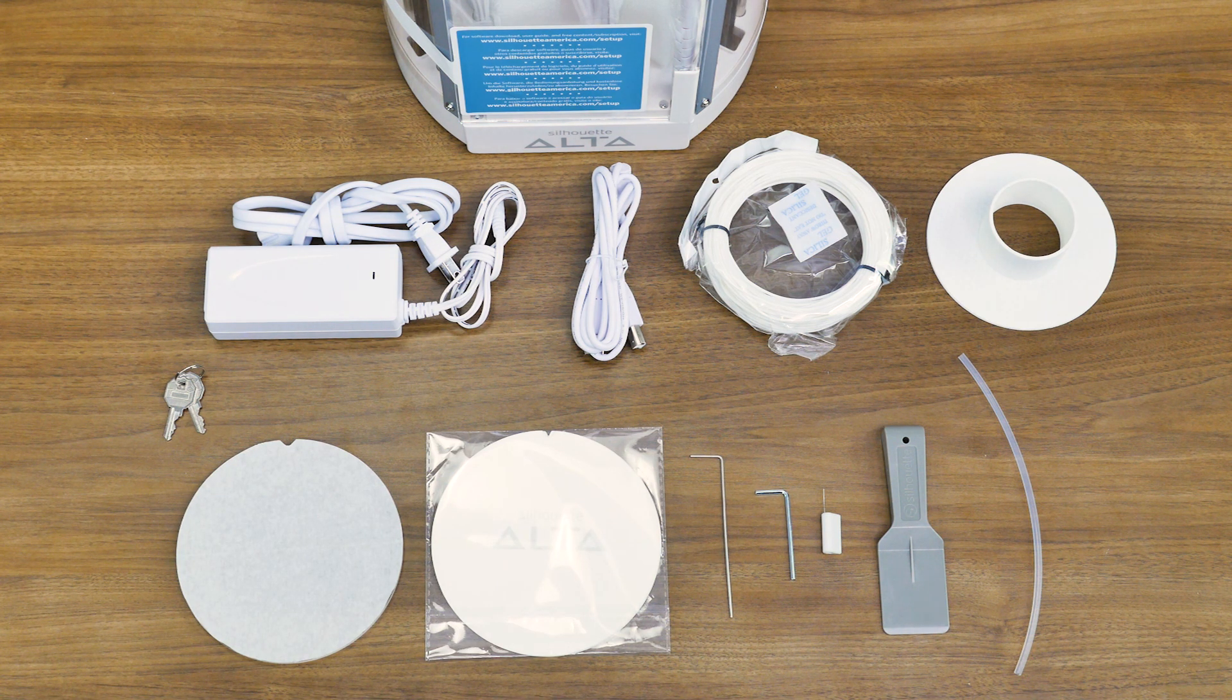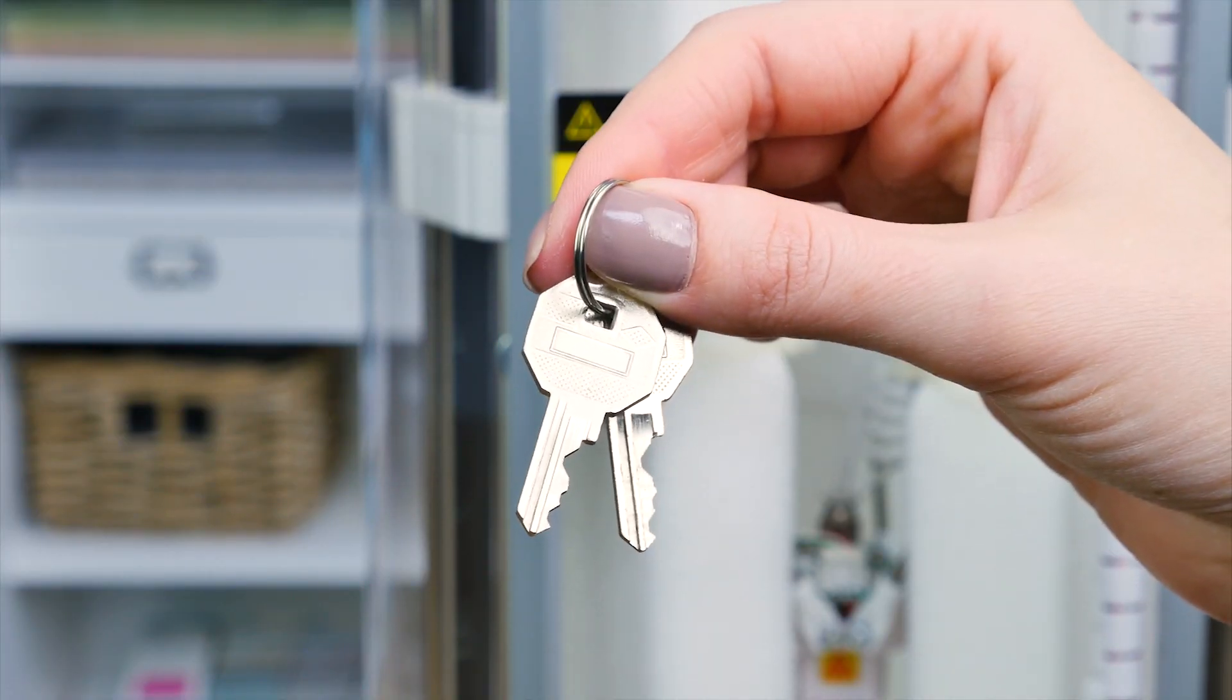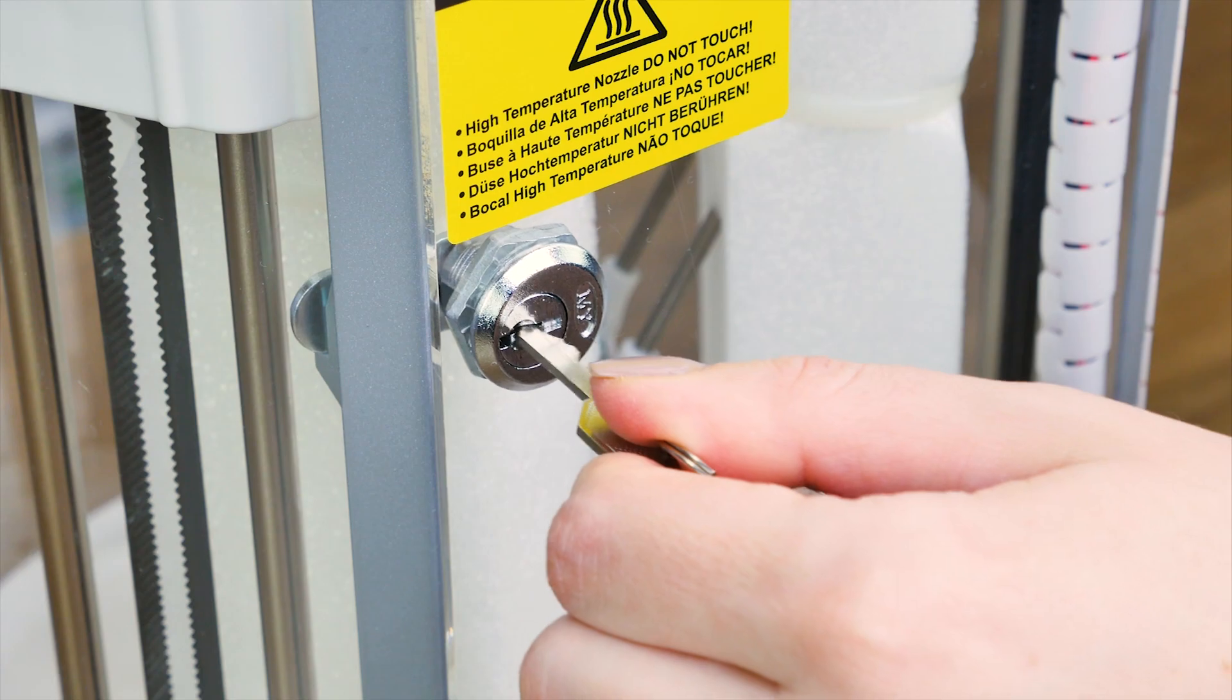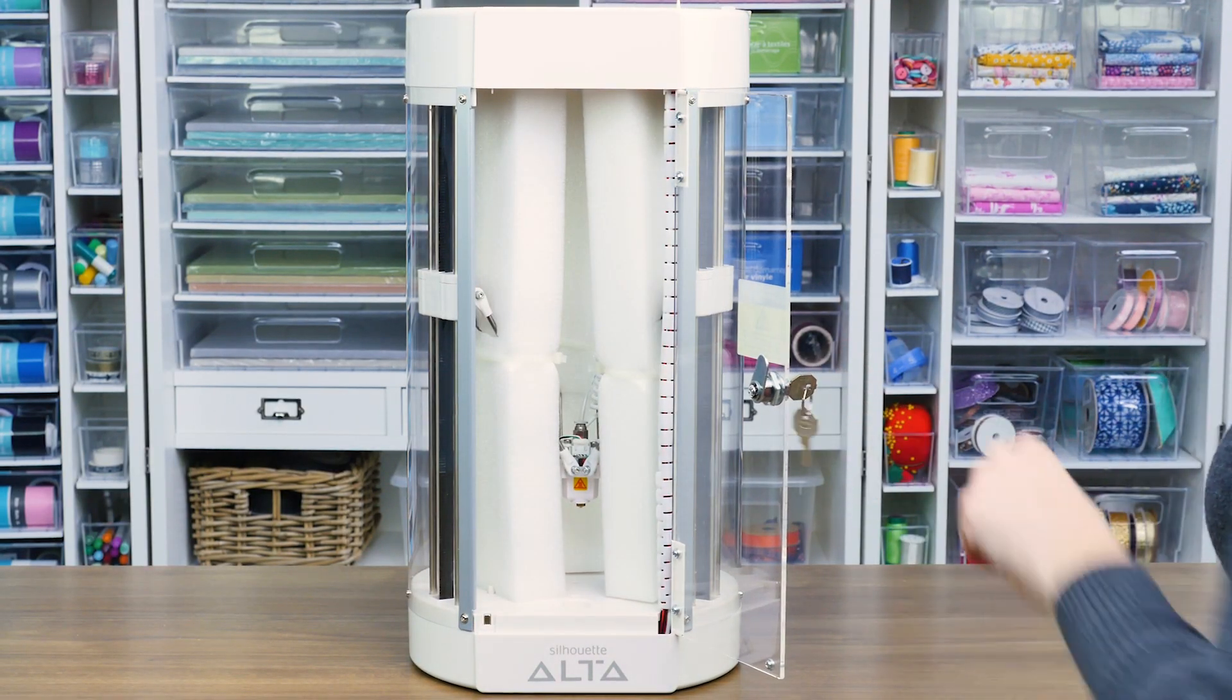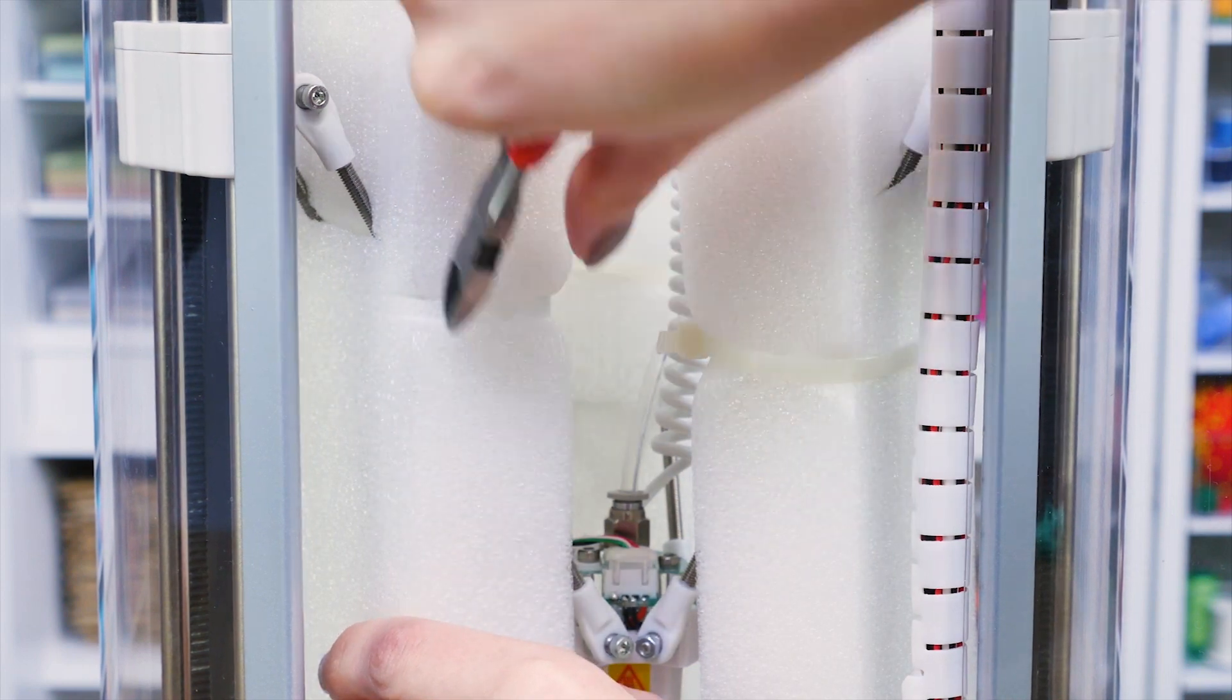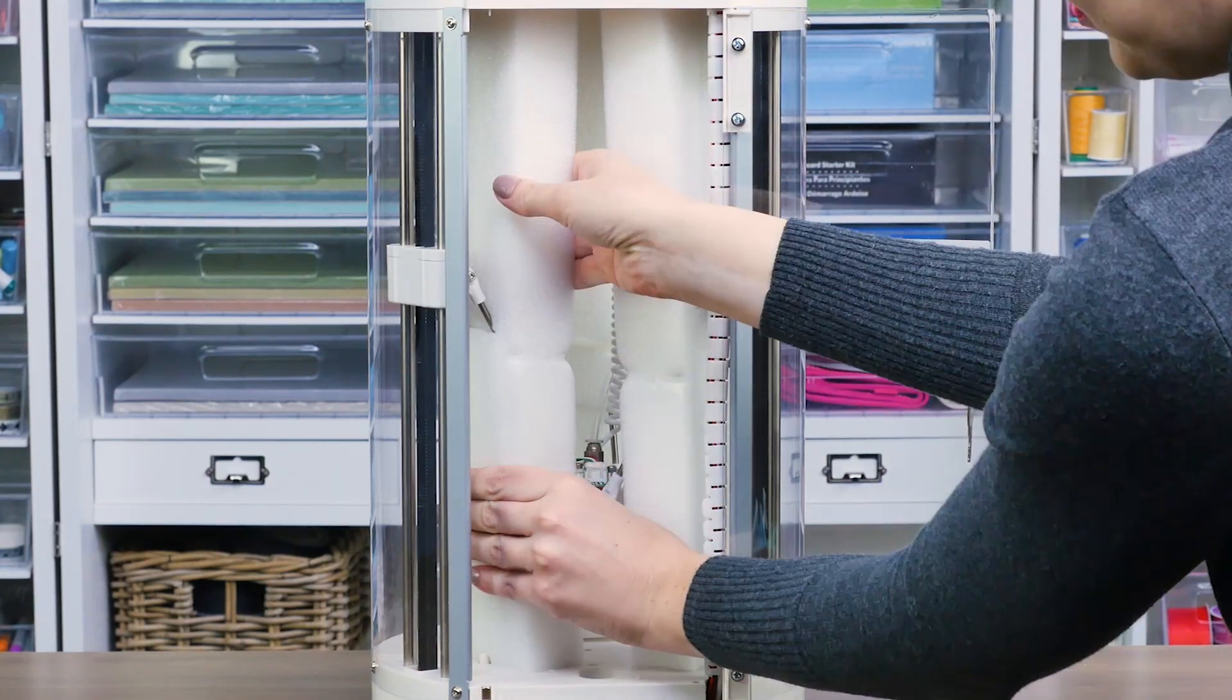Once you've confirmed all items are present, discard any tape. Cut any ties that are holding the foam pieces in place and remove the foam pieces from the machine.